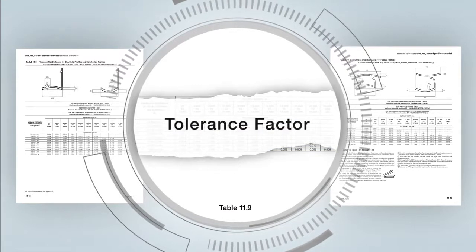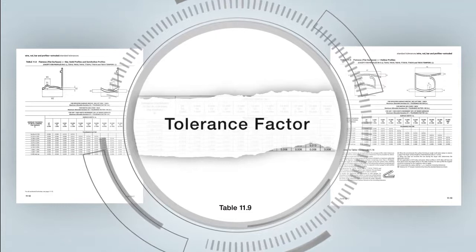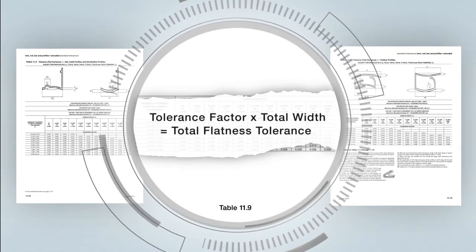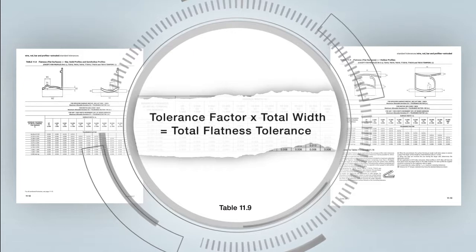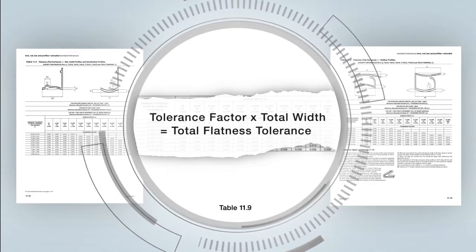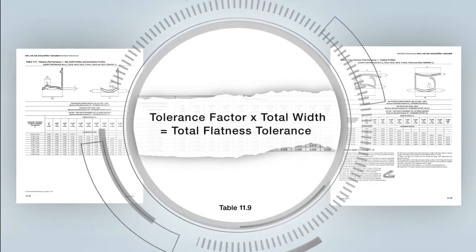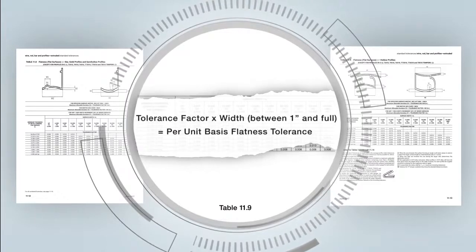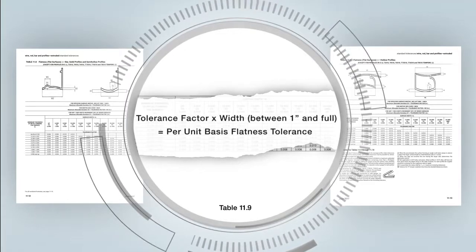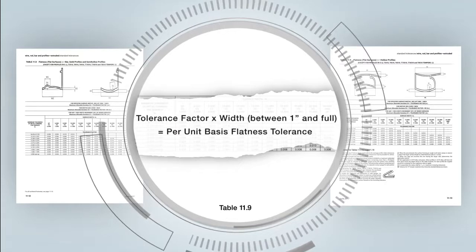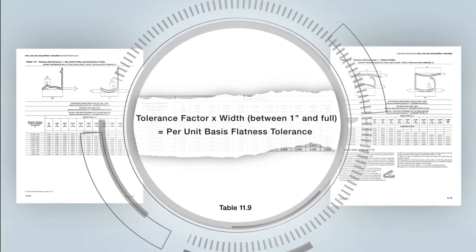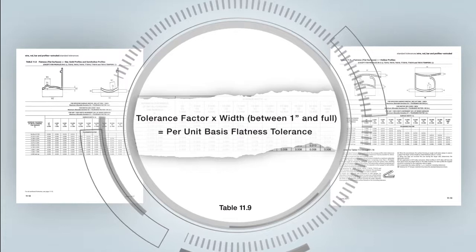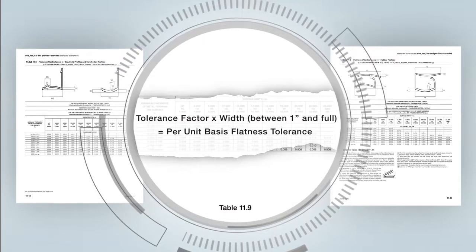The tolerance factor can be used to calculate two other tolerances. First, it can be multiplied by the total width of the surface to determine the total flatness tolerance across the full width of the profile. Second, it can be multiplied across a shorter segment of the surface anywhere between one inch and the full width to determine a per unit basis tolerance, which is needed if there is a more localized flatness condition.